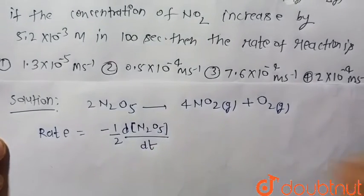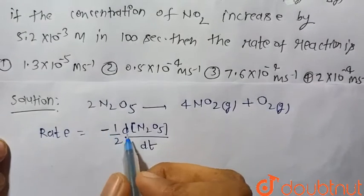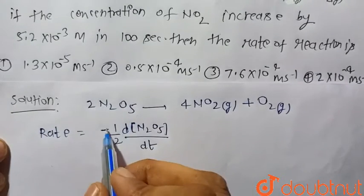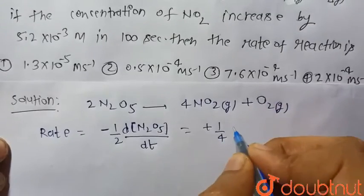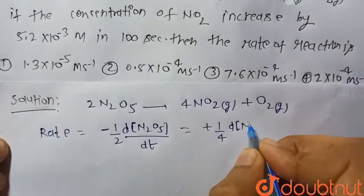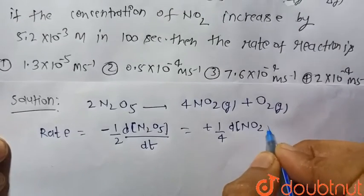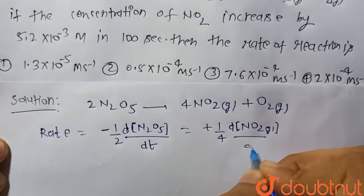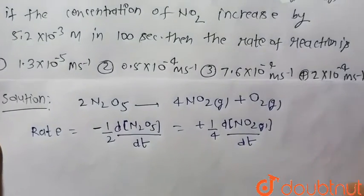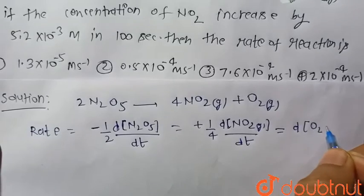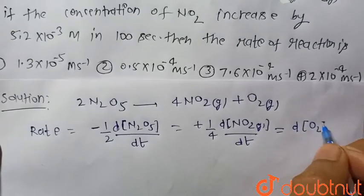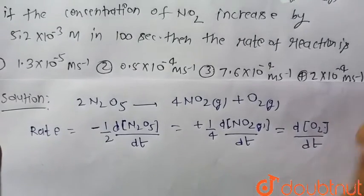The minus sign indicates that the concentration of N2O5 decreases with time; this is the rate of disappearance. Plus 1/4 d[NO2 gas]/dt equals d[O2 gas]/dt.